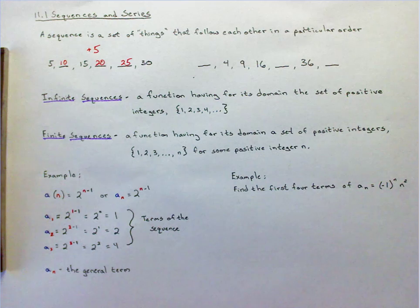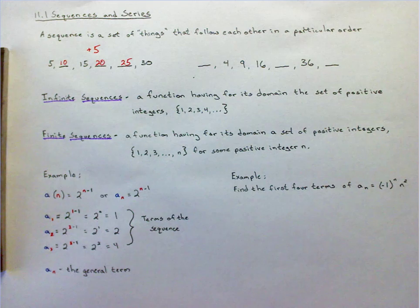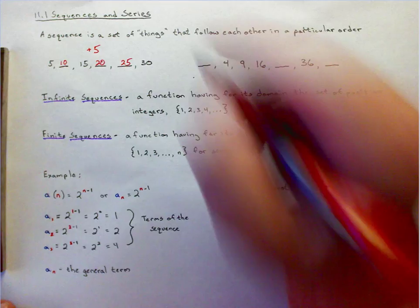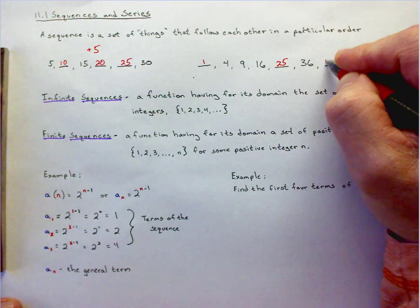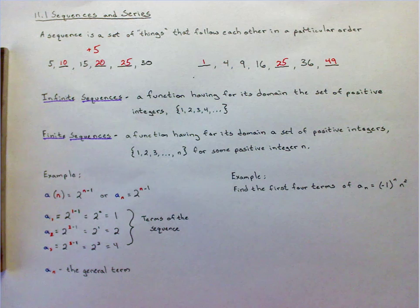And the pattern over here may be a little bit more tricky. It's just a list of numbers, but these numbers are perfect squares. This is 1 squared, 2 squared, 3 squared, 4 squared, 5 squared, 6 squared, 7 squared. And there are patterns through there.